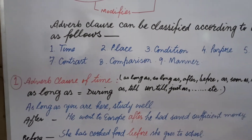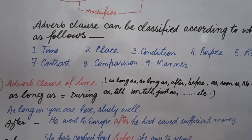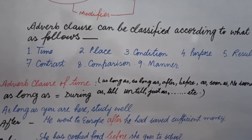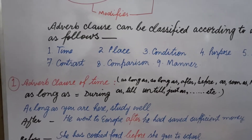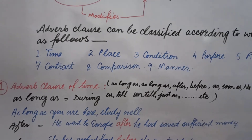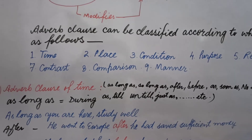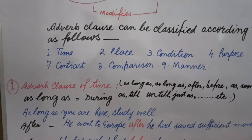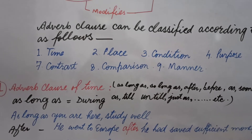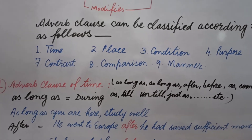Let's take the example of 'as long as.' 'As long as' shows duration. Suppose something happens in a continuous form — you use 'as long as.' Sometimes it is not written in a continuous sentence, even then you use 'as long as.' For example: suppose you are sitting somewhere and during your sitting you will study — we say, 'As long as you are here, study well.'